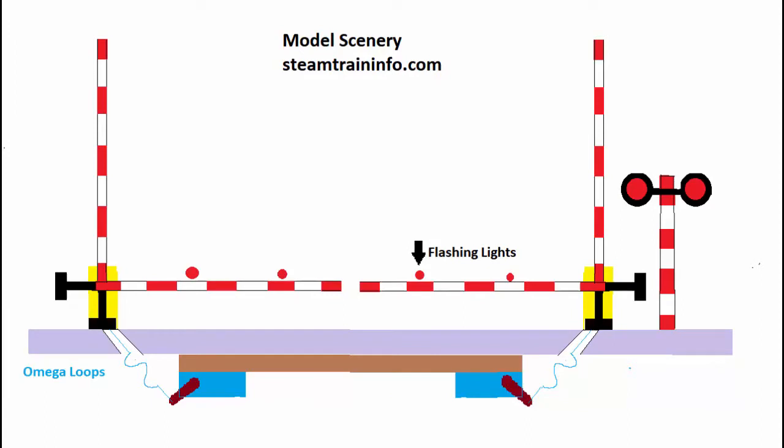So this is a schematic of essentially what we're going to do. We'll start with the wiring, then we'll move on to making the actual gates and the flashing lights. So let's get down to doing the wiring and show you how it works.